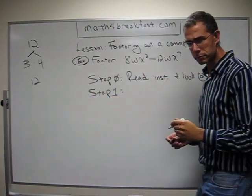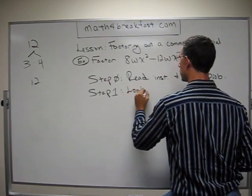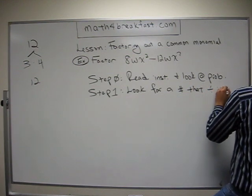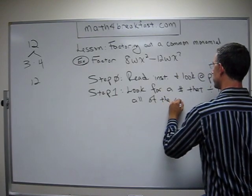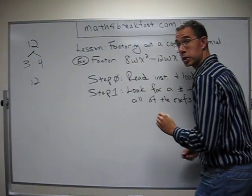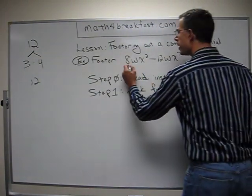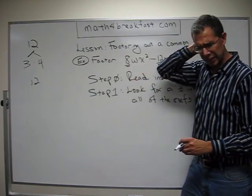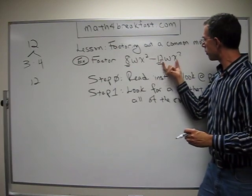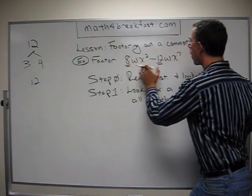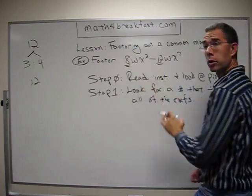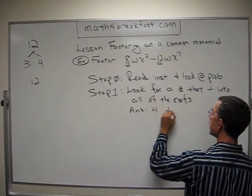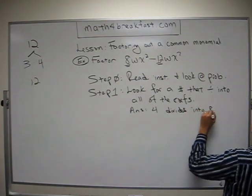Step 1: look for a number that divides into all of the coefficients — I'm going to abbreviate that 'coefs,' because coefficients has way too many syllables to write out. This 8 and this 12 are the coefficients of this problem, because they're the numbers in front of the monomials — those clumps. So you want to look at these two coefficients and decide: is there some number — look for the biggest one — that divides into the 8 and the 12? And the answer here is that 4 divides into 8 and 12.